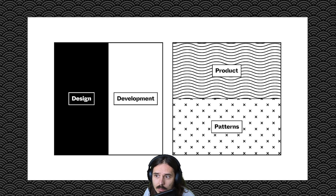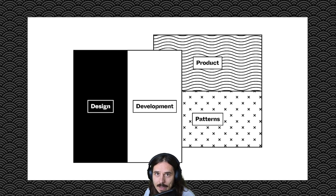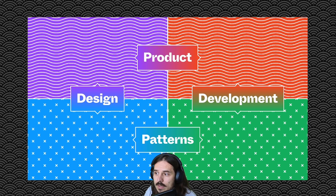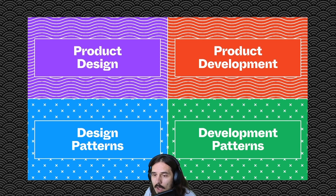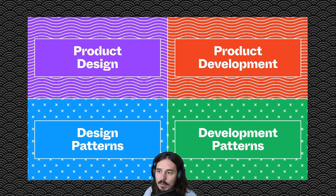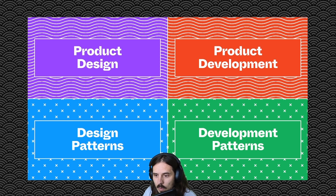We have design and development, product and patterns. As these start to overlap, we're kind of left with four quadrants that, as we bring life to it, look pretty familiar. Product design in the upper left, the design patterns that support it beneath it, and then product development in the upper right with development patterns supporting that effort as well.